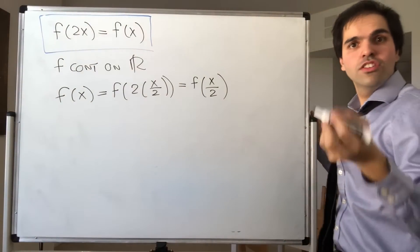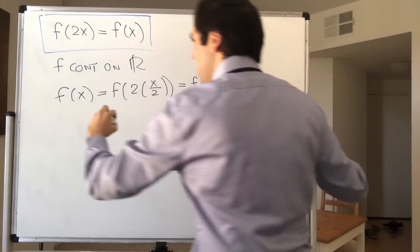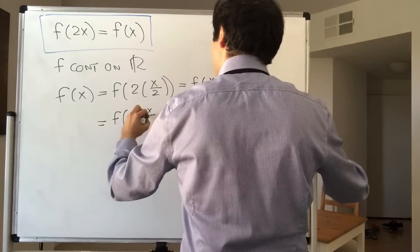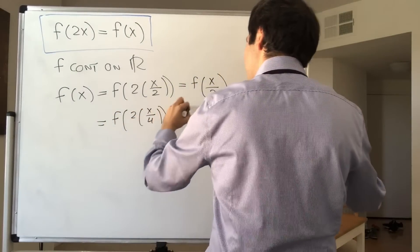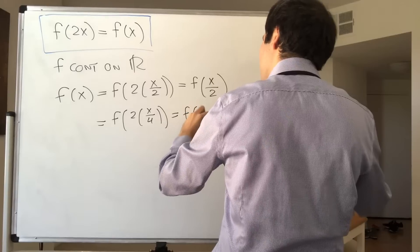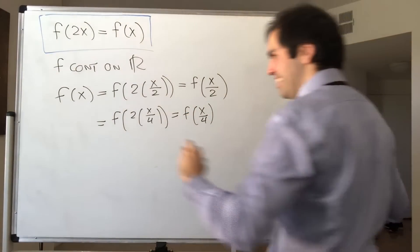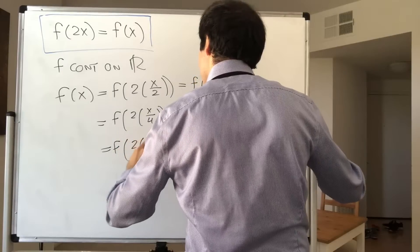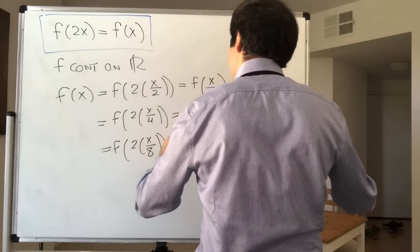But then we can just play the same trick and we get that this is f of 2 times x over 4, and that's f of x over 4. But then again, so that's f of 2 times x over 8, and that's f of x over 8.